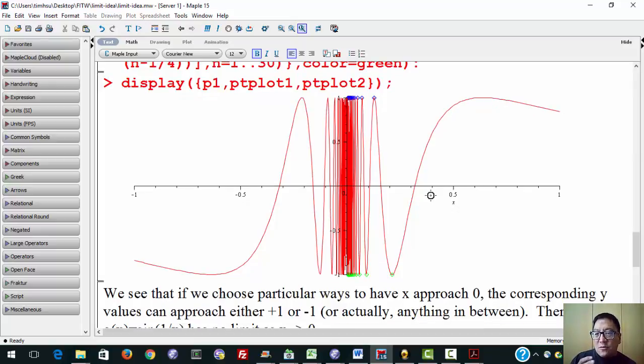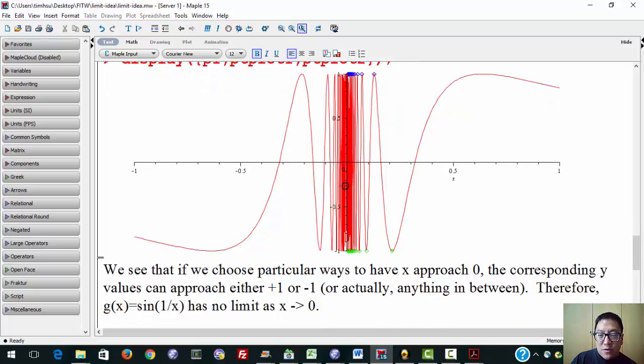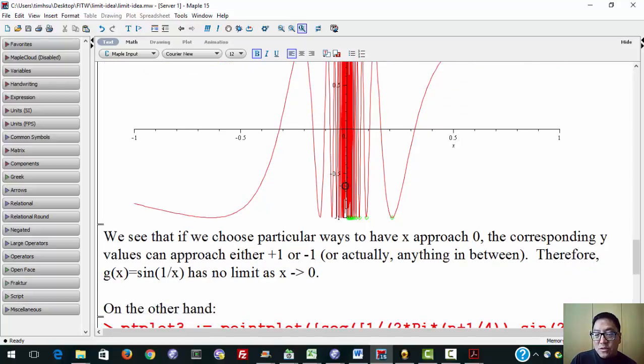And so there's no way there's some reasonable value of the limit of this red curve as x approaches 0, because there's no one particular number, single particular number, that the y values must approach as x approaches 0. So, as we see here, g(x) equals sine of 1 over x has no limit as x approaches 0.